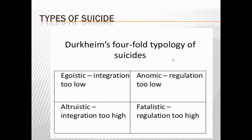We were on to types of suicide. I discussed in the last lecture that there are four types of suicide depending upon the two key concepts, that is social integration and social regulation. If the integration is too high, it is altruistic, and if the integration is too low, it is egoistic suicide. Now moving further to anomic and fatalistic suicide.